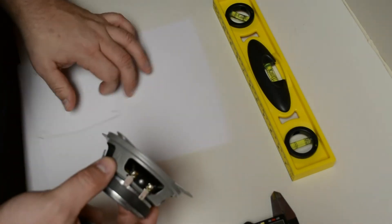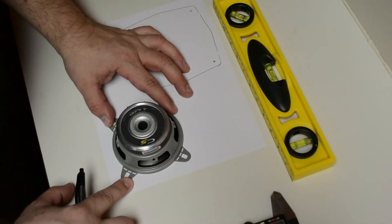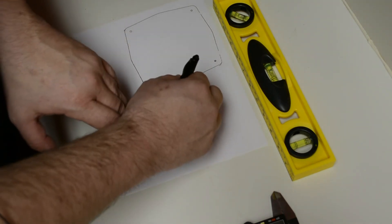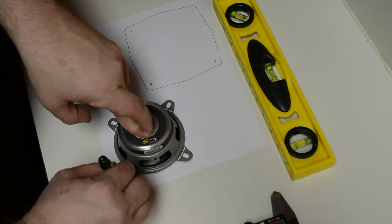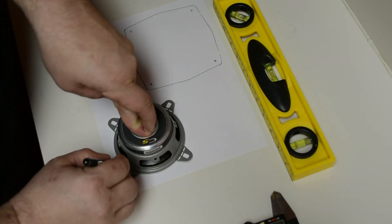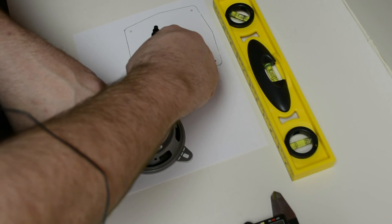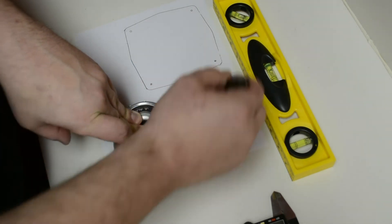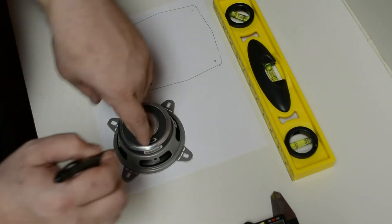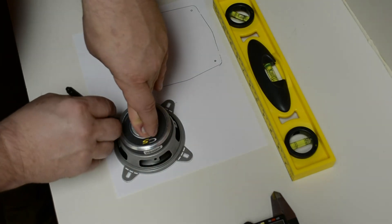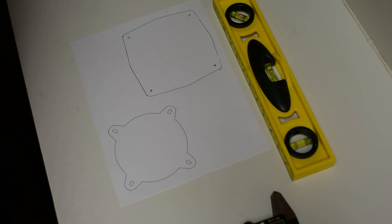Then we're going to take this speaker. We're going to do the same exact thing, and again we want to make sure it's square on the paper, and we're going to trace this outline. And we want to do the holes, the mounting holes on the speaker as well. And there you have it. So now we have both speakers laid out on this piece of paper.